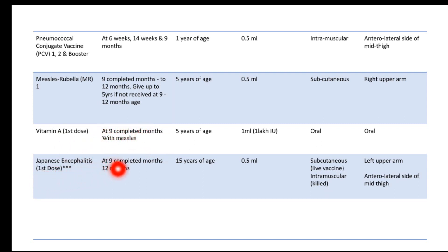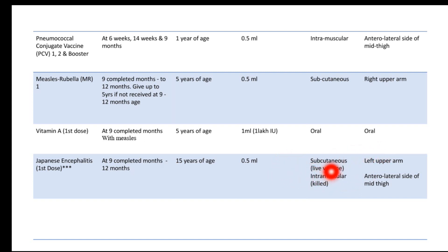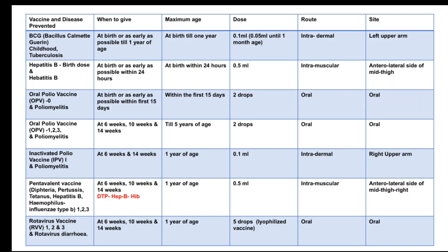Japanese Encephalitis vaccine is given at 9 to 12 months of age and can be administered up to 15 years of age at a dose of 0.5 ml. It has two routes: live vaccine is given subcutaneously, and inactivated or killed vaccine is given intramuscularly. Subcutaneous administration is in the left upper arm, and intramuscular administration is in the anterolateral side of the mid thigh. When intramuscular, it is anterolateral mid thigh; intradermal or subcutaneous is the upper arm.